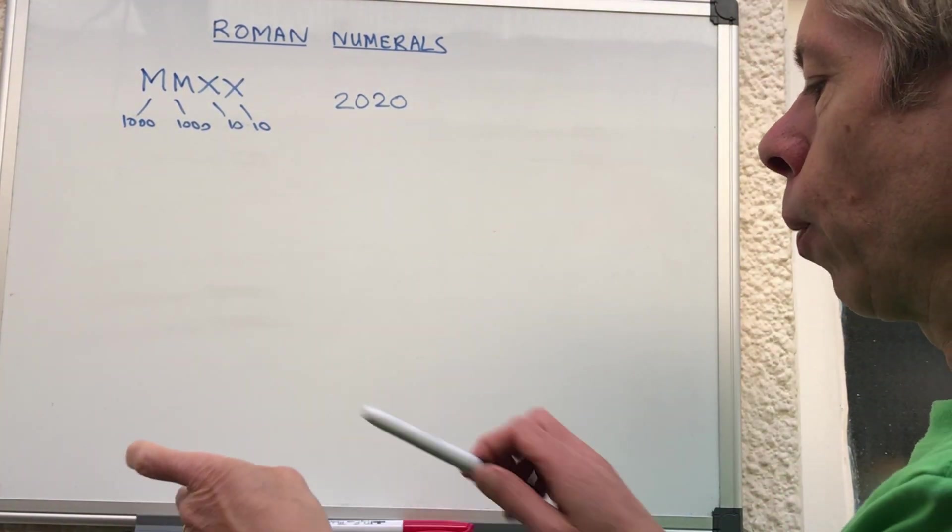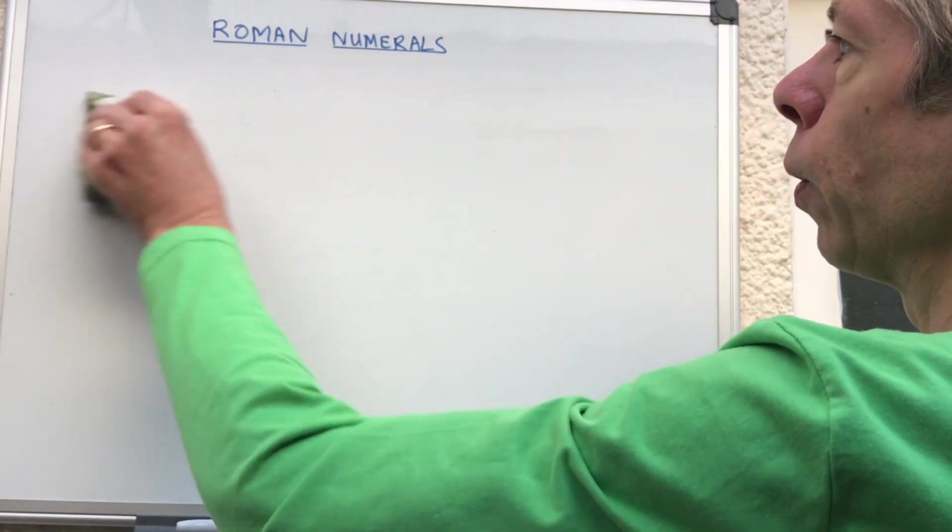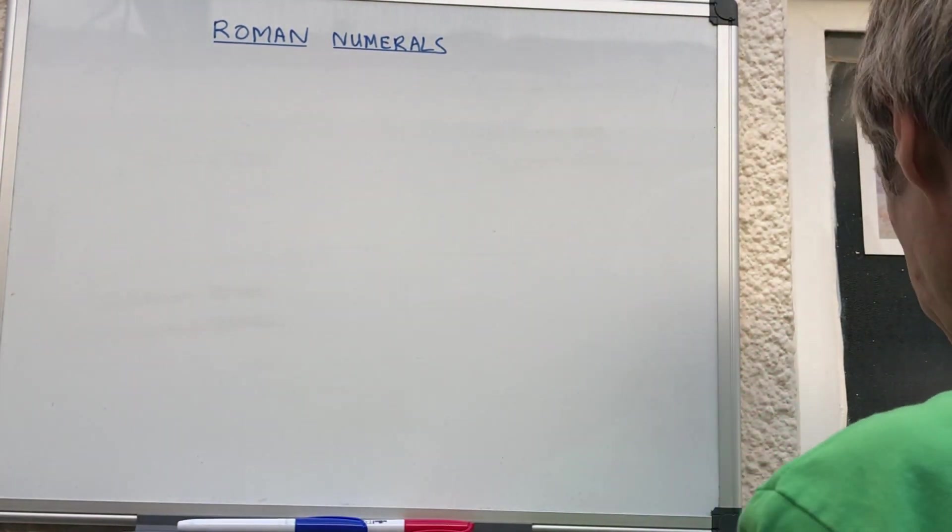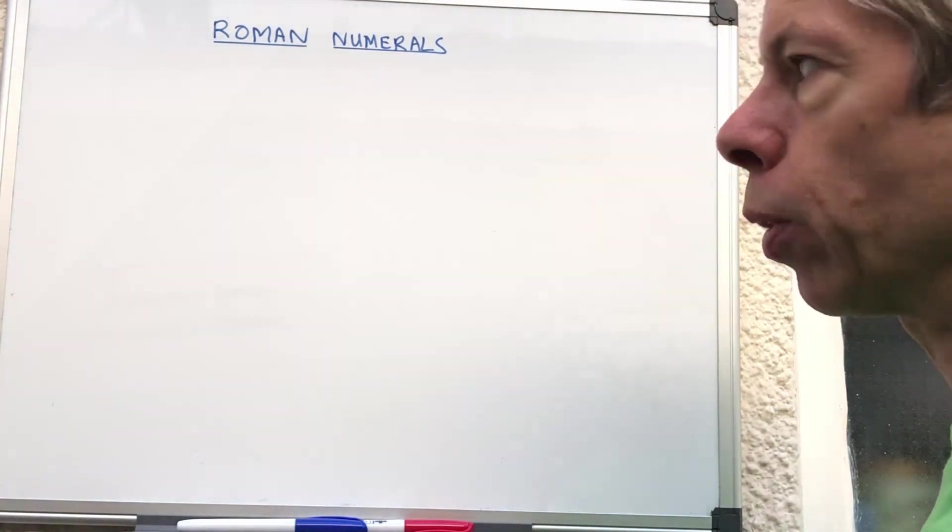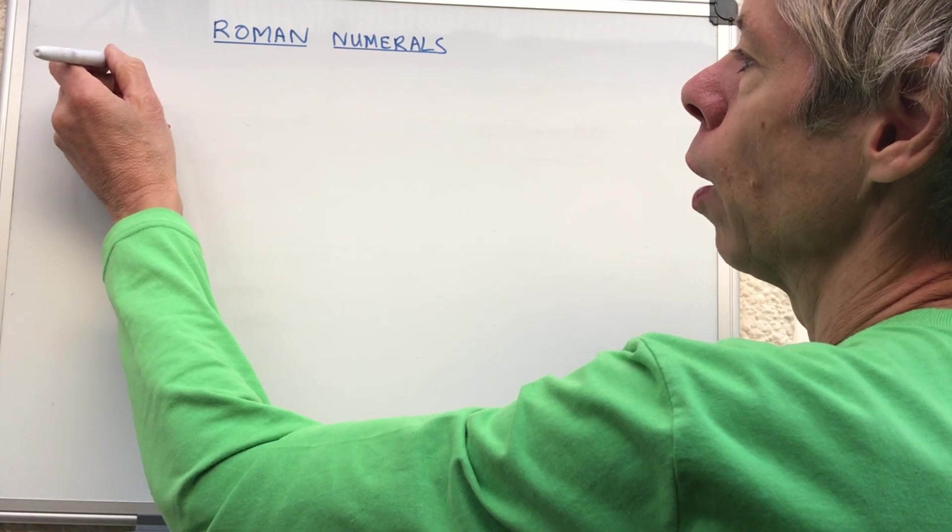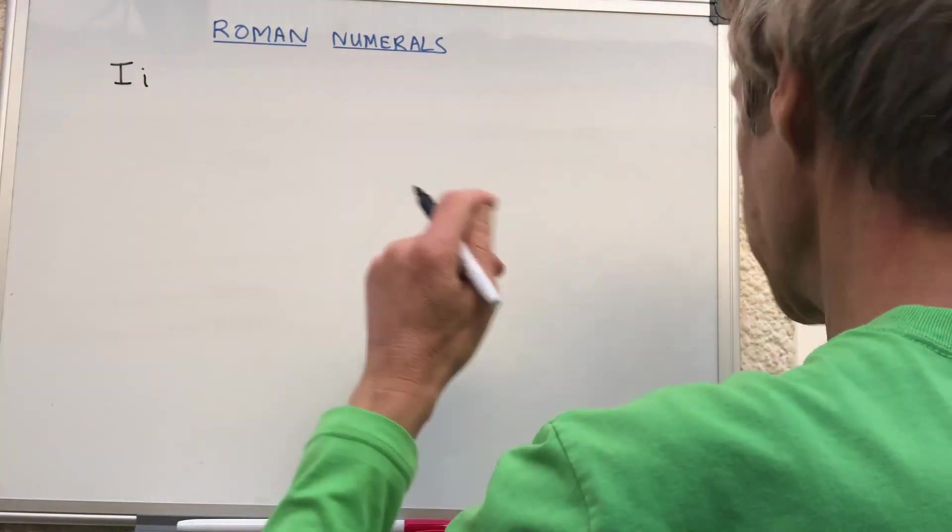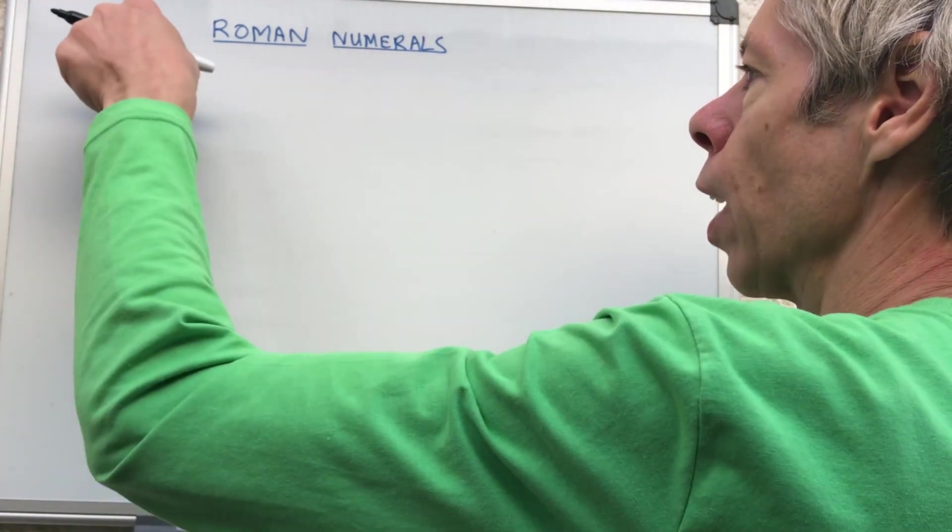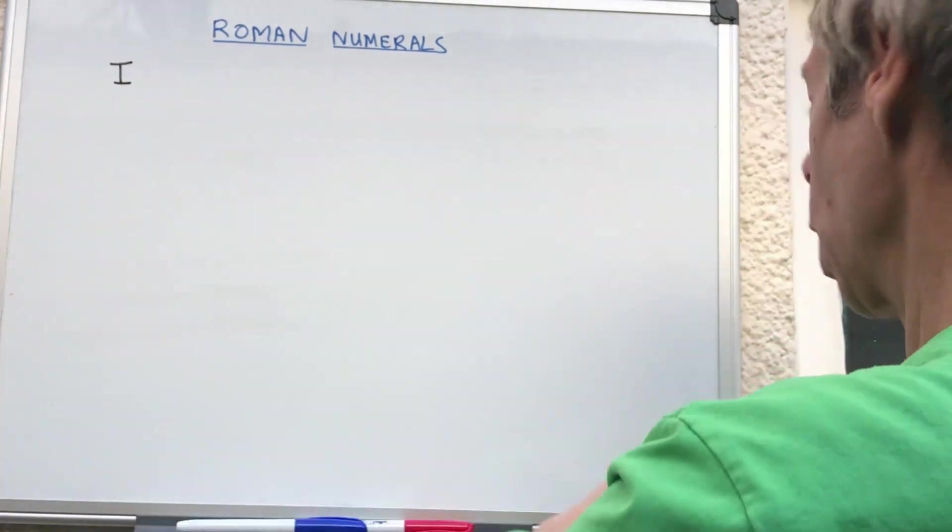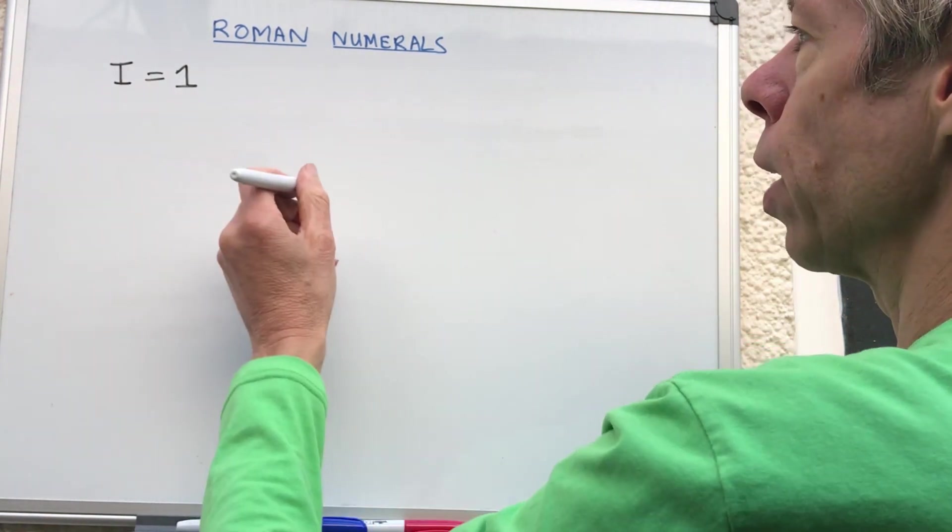So Roman numerals, how do they work? You have some symbols. We actually won't look past a hundred today because it will take too long, so we'll just use the numbers. You can either do a capital I or lowercase I - let me just go for the capitals, so I is one.